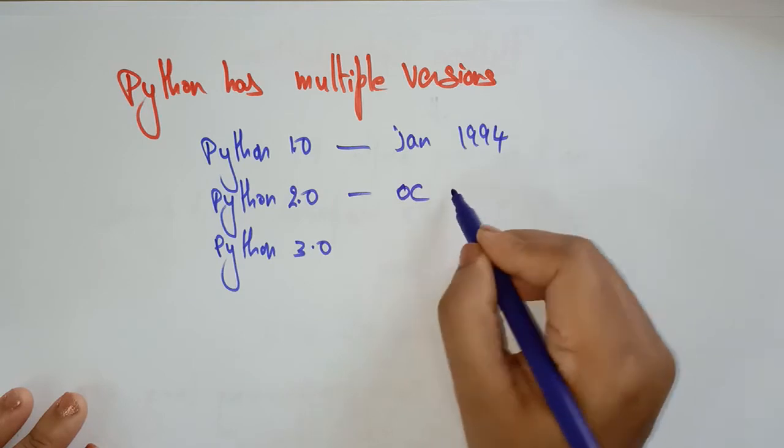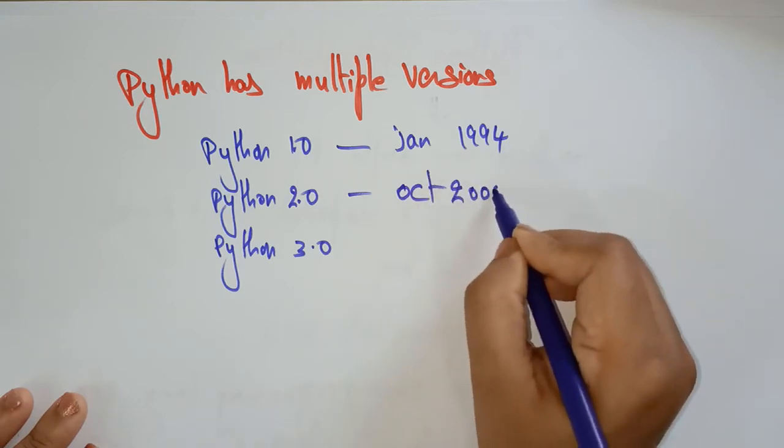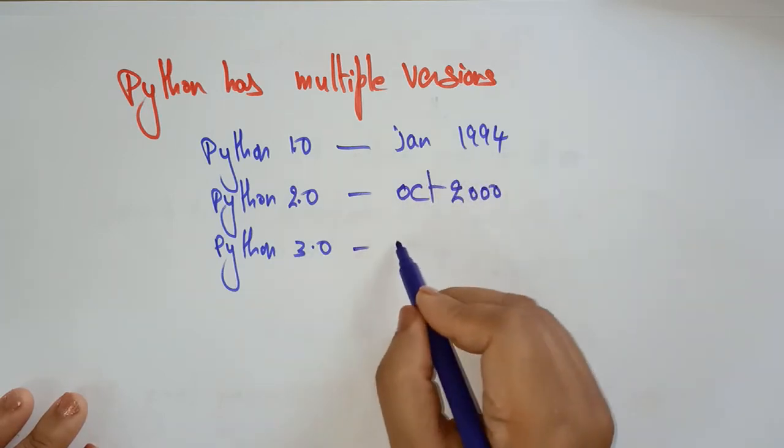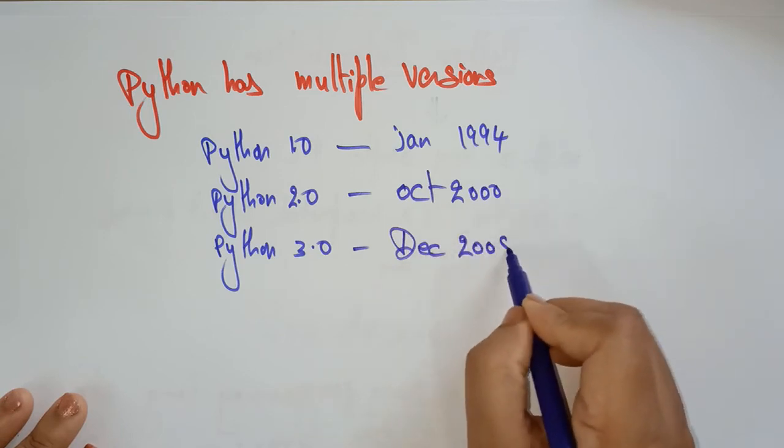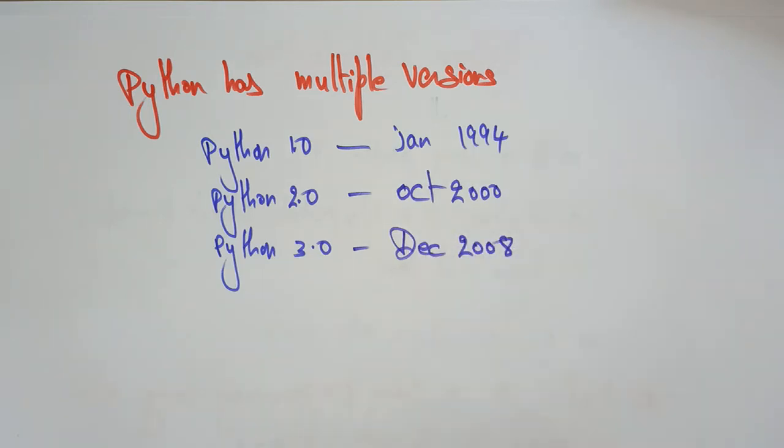And 2.0 is introduced in October 2000. And whereas Python 3.0 is used in December 2008. So, these are all the versions.